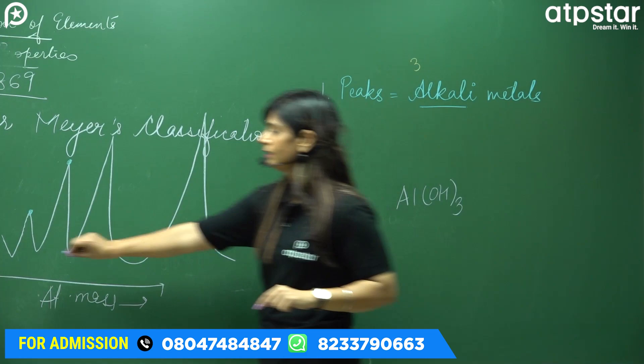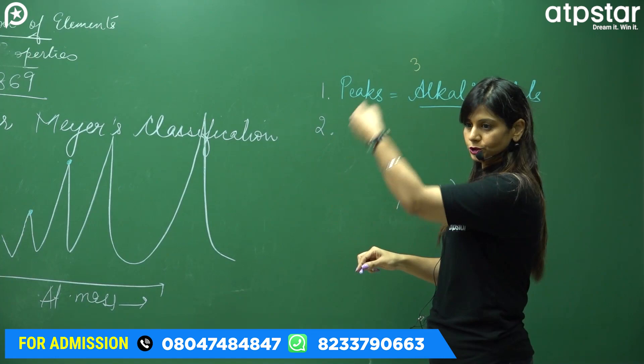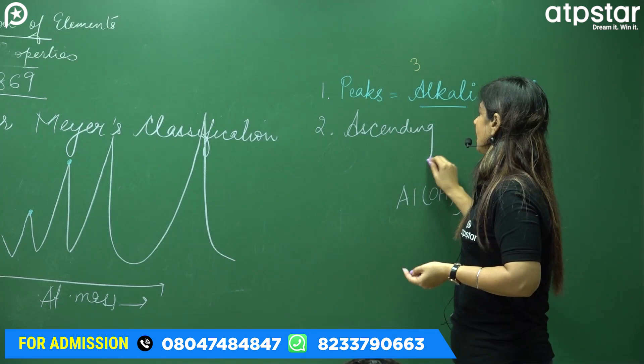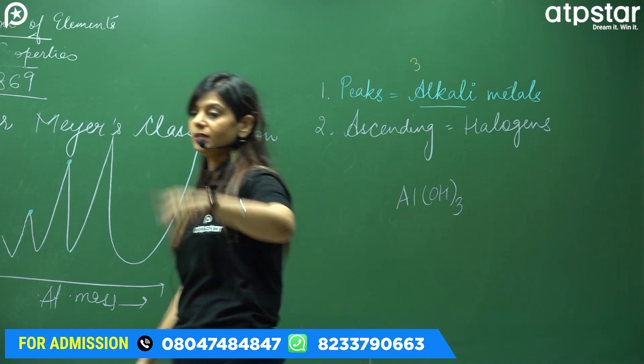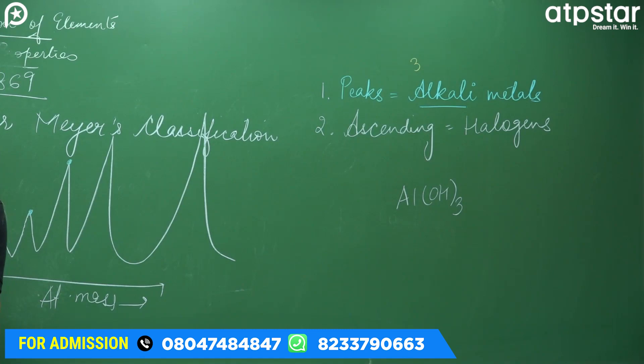Alkali metals were at the peaks. Then the ascending portion — what was on the ascending portion? Almost at the midpoint: halogens. What are halogens? Halogens are Group number 17, the last but one group. Fluorine, Chlorine, Bromine, Iodine, Astatine.